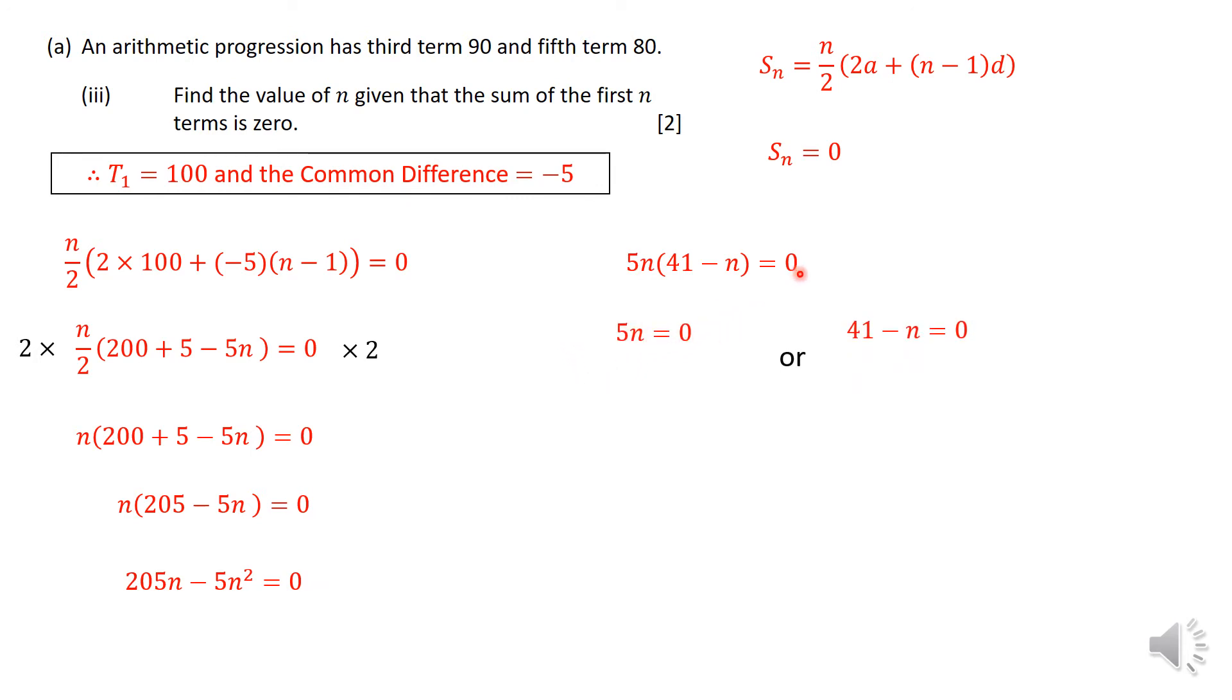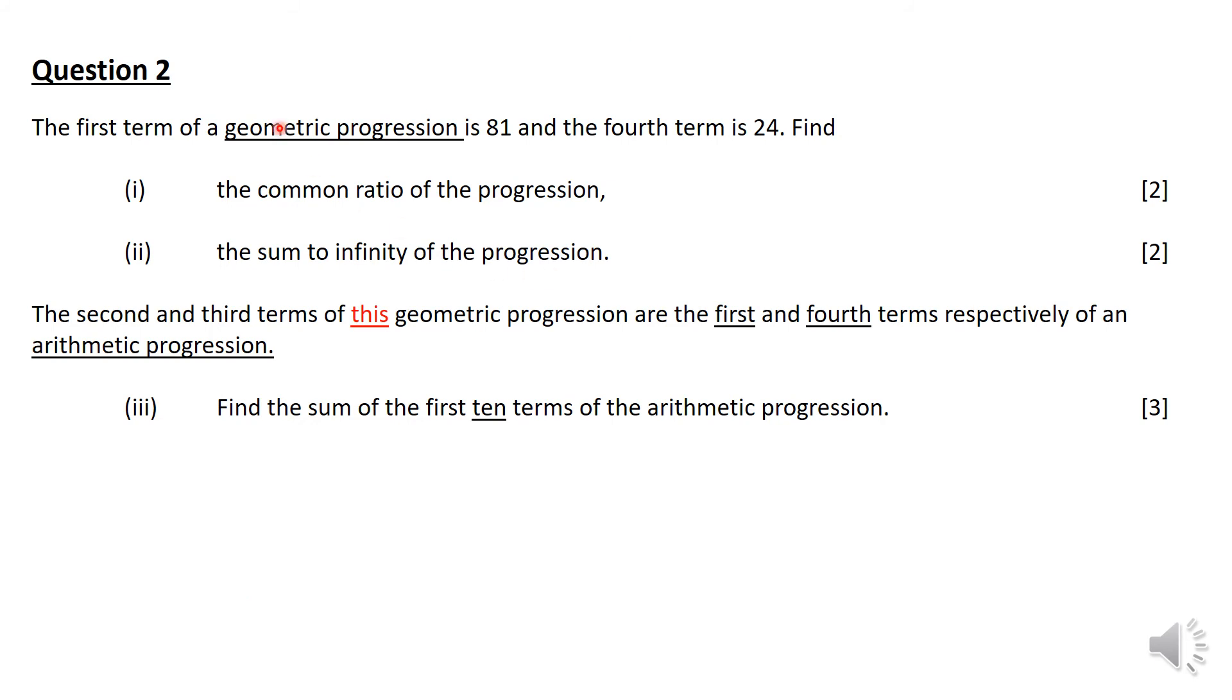5N equals 0, this one I'm going to reject because you can't have N equal to 0. We're looking for the number of terms where if you add those terms together starting from the first term, you get to 0. How many of those terms would it be? It can't be 0, obviously, so it has to be 41 terms.